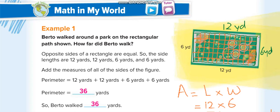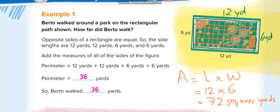The area is not in this lesson; you will take it later in lessons 3 and 4. Area means how many square units are inside the figure. The perimeter means the distance around the figure, and the area means how many square units are inside.